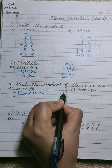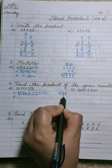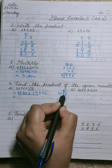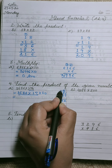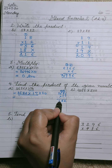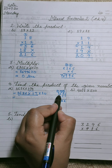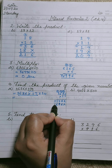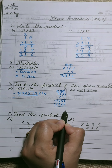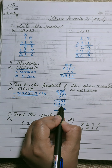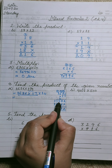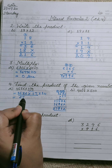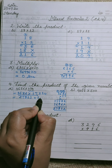Multiply 1636 by 17: 7 sixes are 42 — 4 carries to tens; 7 threes are 21 plus 4 is 25 — 2 carries; 7 ones are 7 plus 2 is 9; 7 ones are 7 plus carry. Second step for tens digit 1: 1 six is 6; 1 three is 3; 1 six is 6; 1 one is 1. Adding place-wise gives 27,812. Then multiply by 10 — attach one zero at the right side. Answer: 278,120.